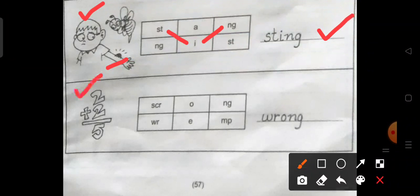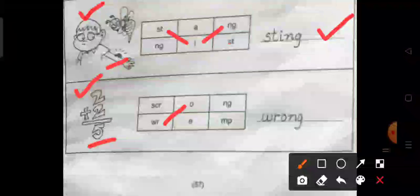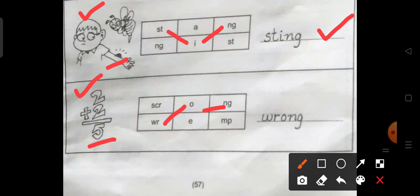2 plus 2 is 5. Is it? No. The sum is wrong. So 2 plus 2 is 4. So this is wrong. You have to find the spelling of the word wrong in the grid here. W-R-O-N-G wrong. And then write it.